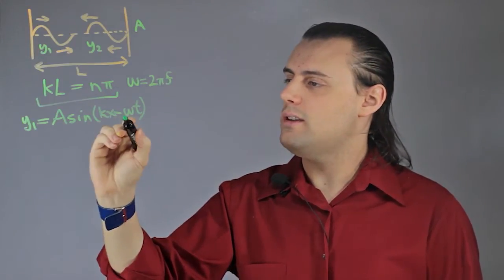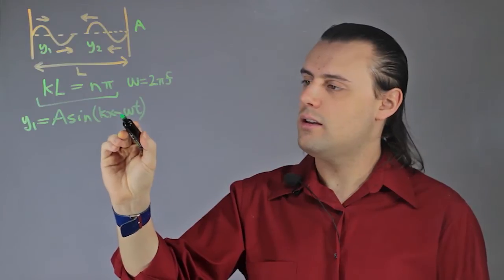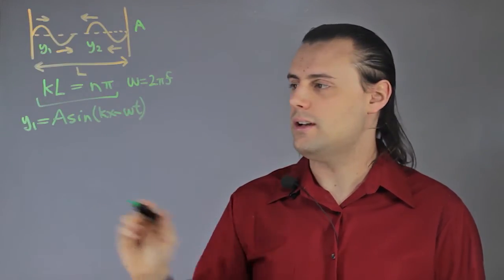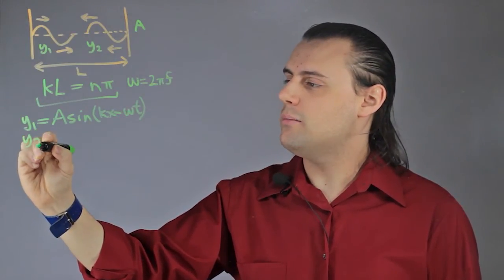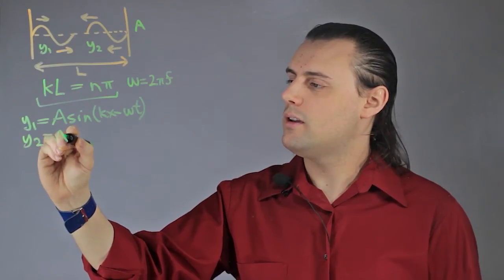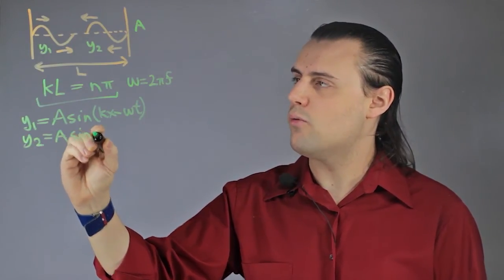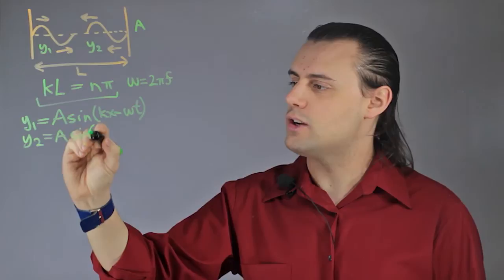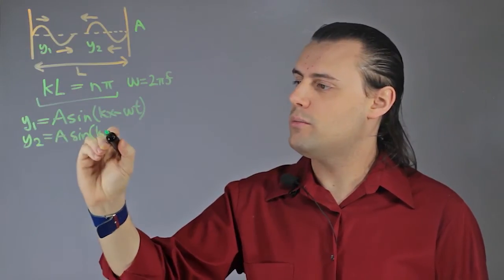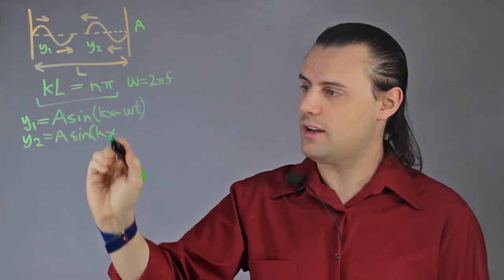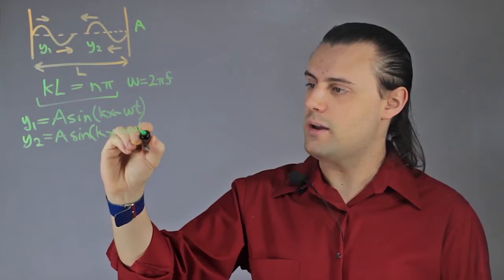Now we see that for a wave moving from left to right, there's a negative in front of omega t. We can simply switch that sign to describe mathematically a wave moving in the opposite direction. So wave 2 would be described by A times sin(kx + ωt).